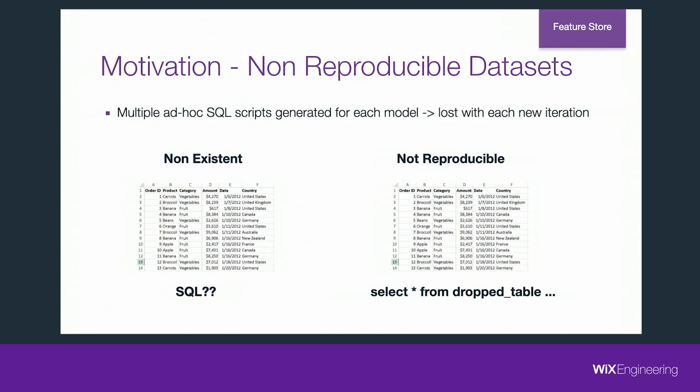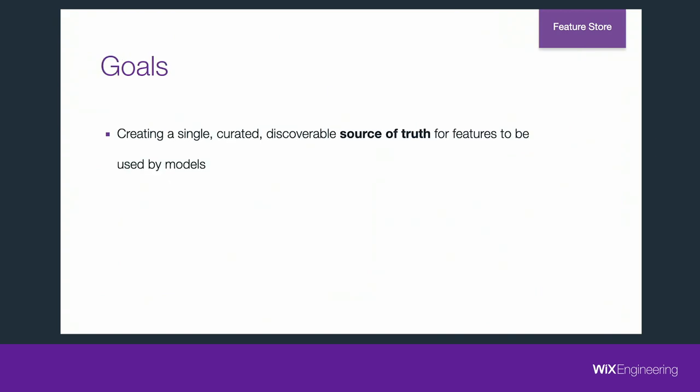Why is that? We started to observe that in a lot of cases, the SQL contents of ad hoc queries generated for each dataset are either inexistent — we see the datasets but have no idea how they were created, the SQL is lost in time — or non-reproducible. We see the dataset and the SQL that generated it, but the underlying tables might have dropped or their schema changed. We have no way to reproduce the dataset on a different population.